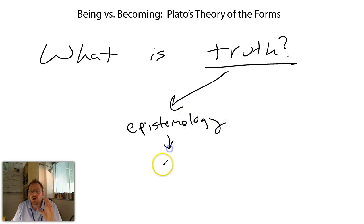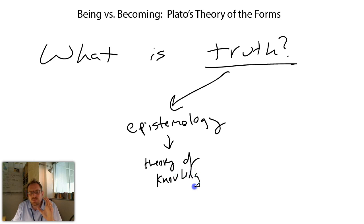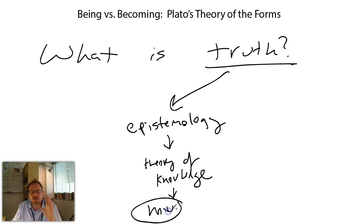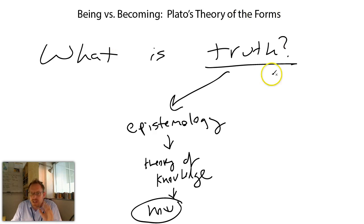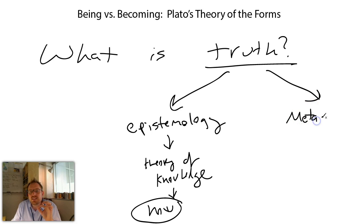Epistemology refers to a theory of knowledge. So when I ask how do you know it's true, that 'how' is the key term — that's the epistemological question. When we're talking about whether something is true, we need to know how it is we can know that anything is true. On the other hand, when we say something is true, we're also engaging in a metaphysical discussion.